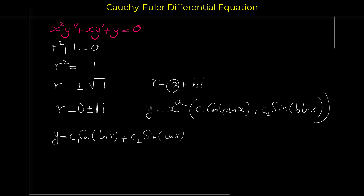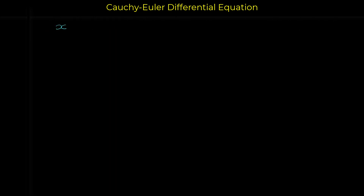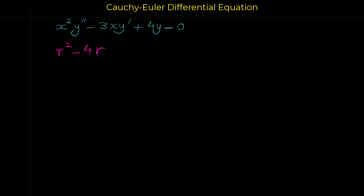Let me show you another example. The given differential equation is x squared y double prime minus 3x y prime plus 4y equals zero. The characteristic equation is r squared plus (a minus 1) r plus b equals zero; here a is negative three, so a minus one is negative four, giving minus 4r, and b is four, so plus four equals zero.